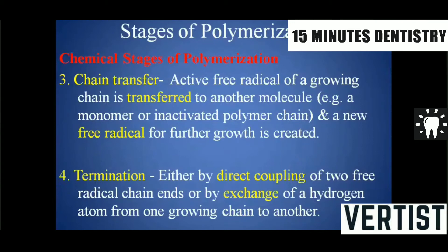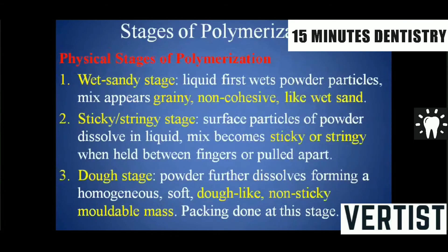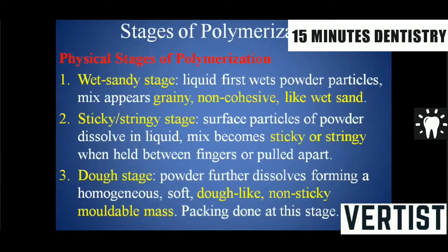There are four chemical stages of polymerization: induction, propagation, chain transfer, and termination. The physical stages are classified according to the state of the material after polymer and monomer are mixed. The first is the wet sand stage, with a grainy, non-cohesive appearance like wet sand on a seashore. The second is the stringy stage, where the surface of the polymer particles dissolves in the liquid and the mix becomes sticky — strings can be formed when pulled between fingers.